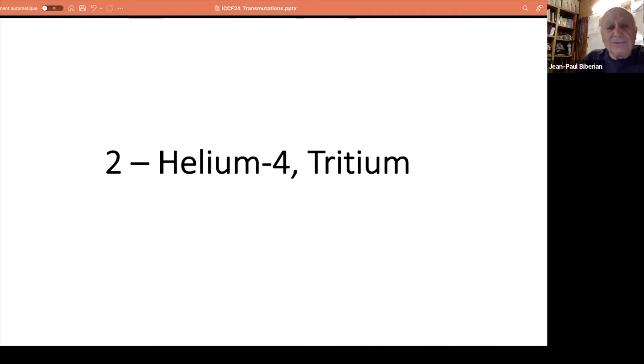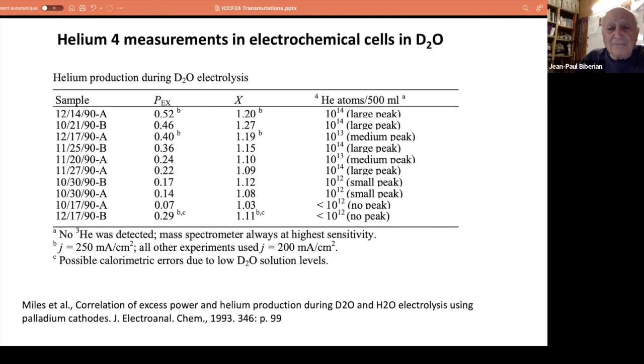Now let's go to the light elements first, helium-4 and tritium. At least six, seven, eight groups have done helium measurements. Miles made very good experiments where he was measuring excess heat and helium production. Every time he had excess heat, he had helium; no excess heat, no helium. So it's a good correlation between helium and excess heat, indicating it's not a leak. This proves that there's something in the mechanism that's producing helium-4.